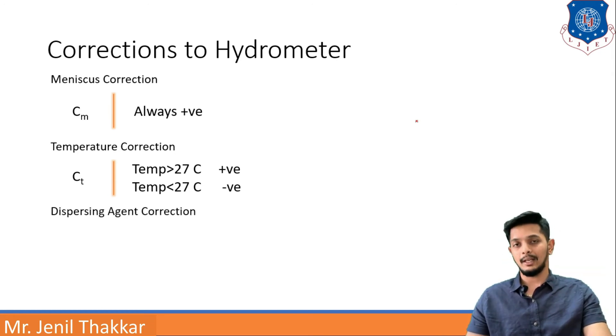Same way third correction is dispersing agent correction. Because we are using some agents in the water and soil it is to be added or removed. Here dispersing agent correction is CD. CD is always negative. So we have to remove that from the values got by hydrometer method.